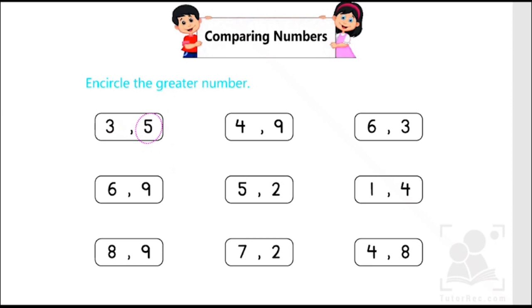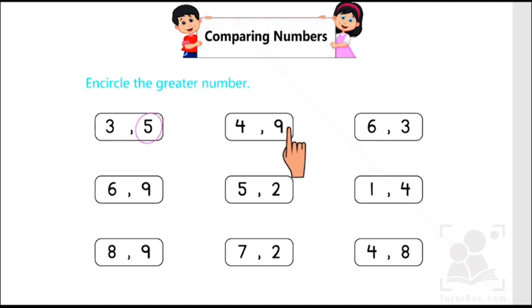In the next box we have two digits, four and nine. So when we count from one to nine, let's see where nine comes — either earlier or later. One, two, three, four, five, six, seven, eight, nine. In this counting, four comes before nine, which means nine comes later. Therefore we are going to circle nine as it is the greater number.